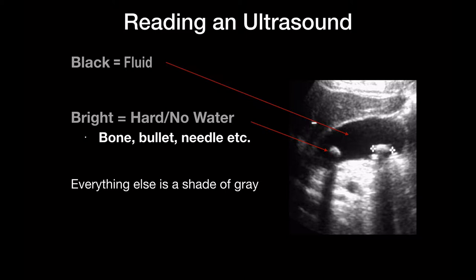And then we have these really bright things — these are gallstones. They're really bright because they reflect all the ultrasound beams. In fact, they reflect so many beams that they create shadows because none of the sound waves get through. All the sound waves get reflected and none get transmitted. As opposed to the fluid area, where most of the sound waves are transmitted because there's no bright reflector.